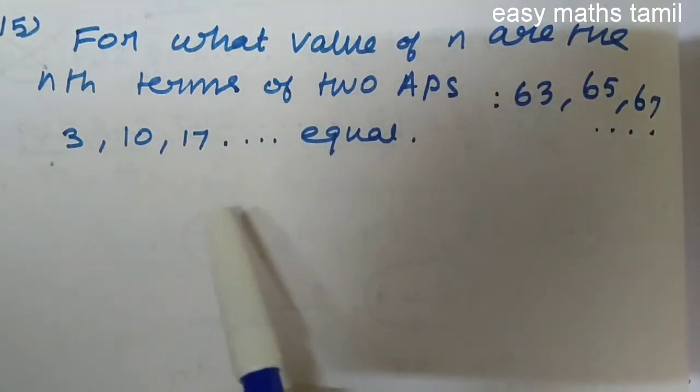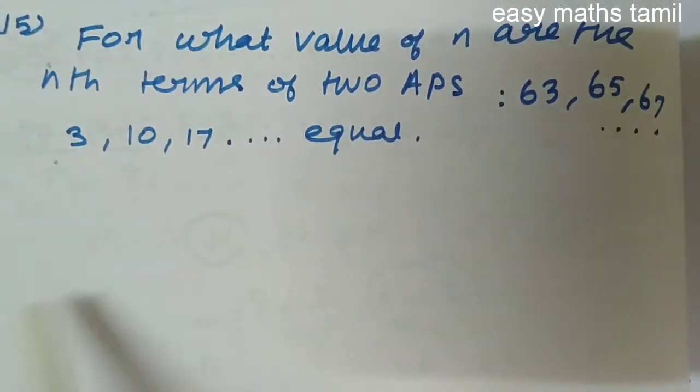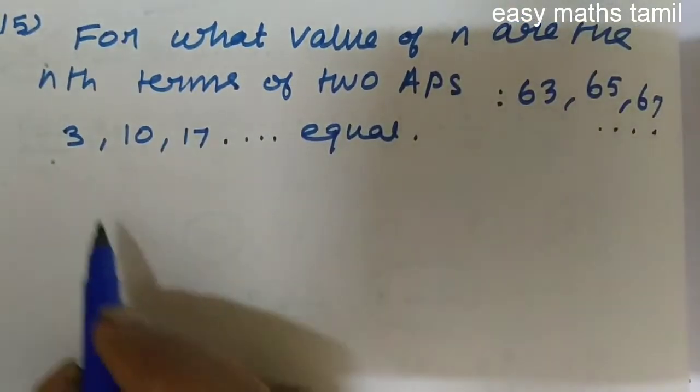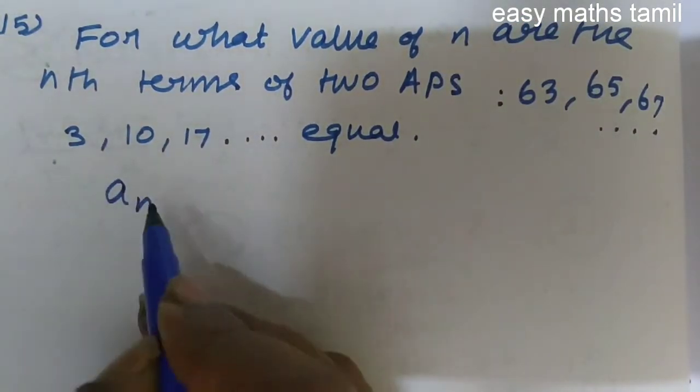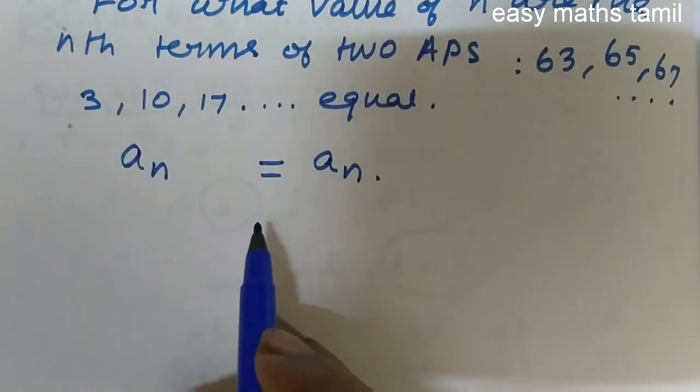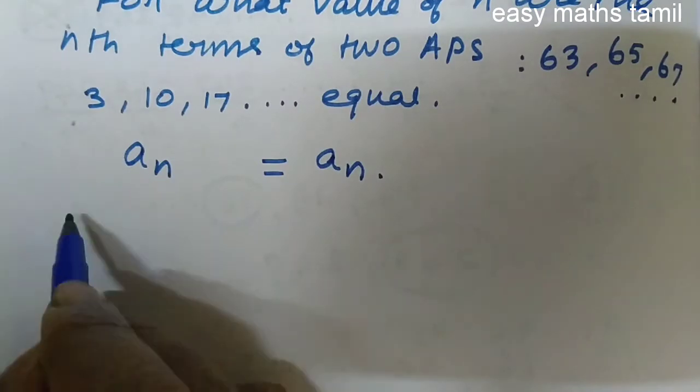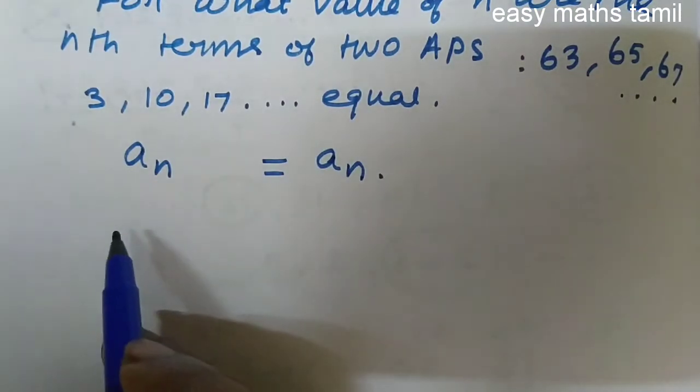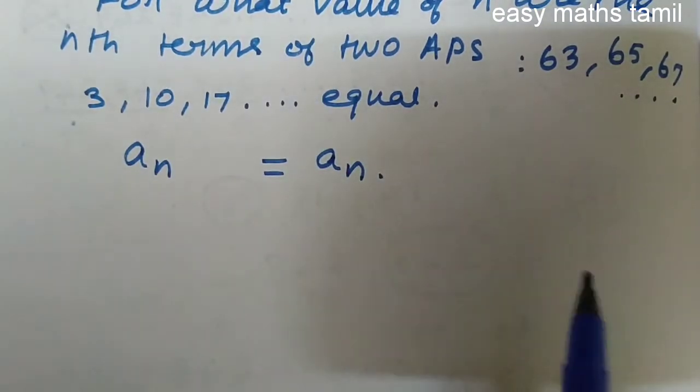First equate the an values of these two sequences. The an value of first sequence is equal to the an value of second sequence. Before doing so, first write the sequence, first obtain the value of a and d.